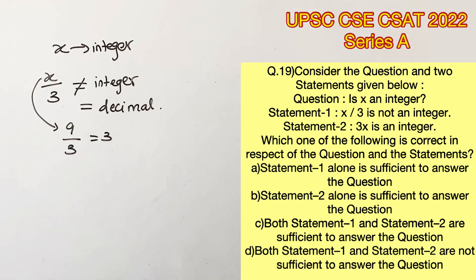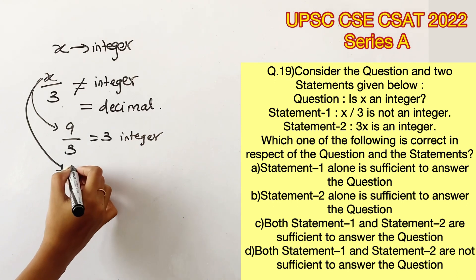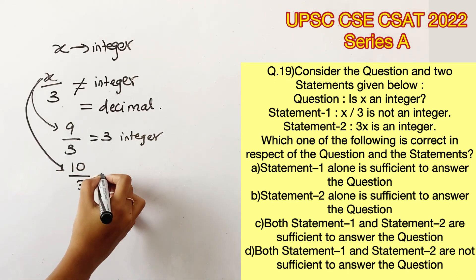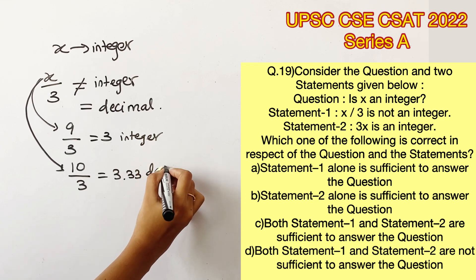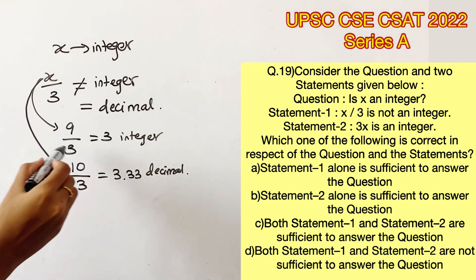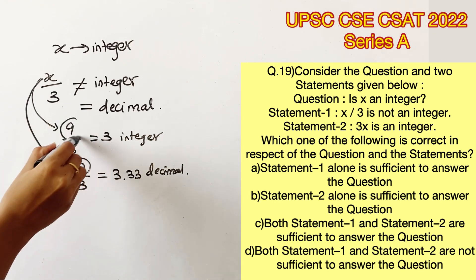We are getting the answer as 3, which is an integer. Now let's try and substitute a value which is not divisible by 3. Let's take 10. Now 10 by 3 will give us 3.33, which is a decimal value. If you see in both cases, we took an integer, but the answer is either a decimal or an integer.